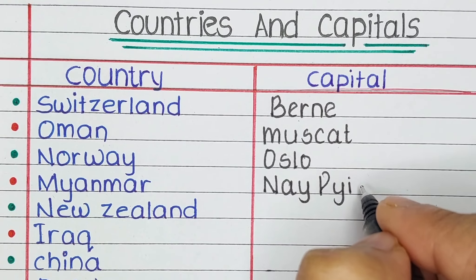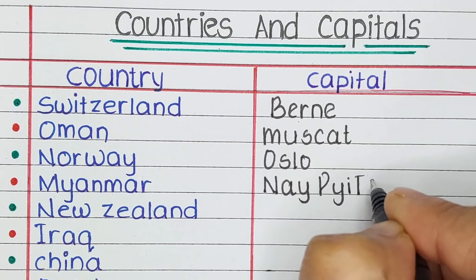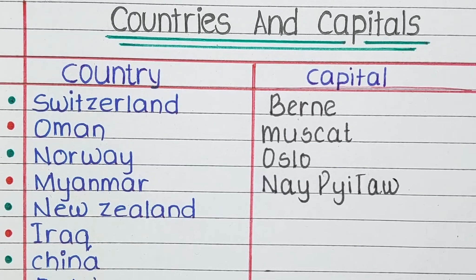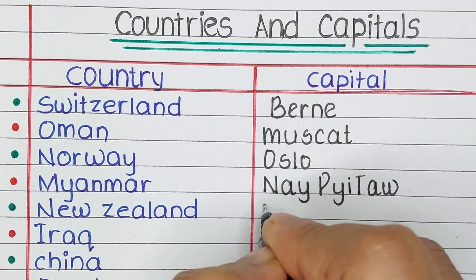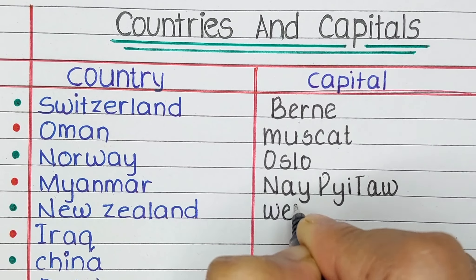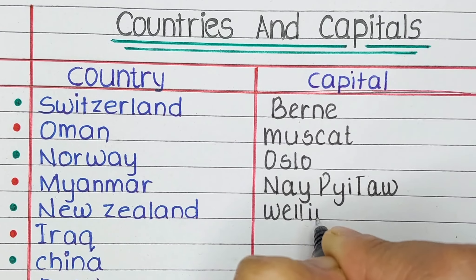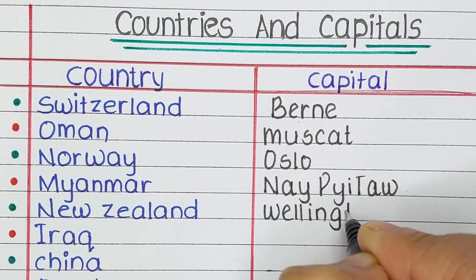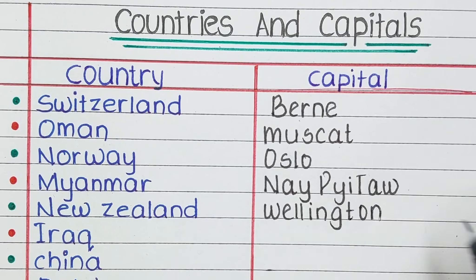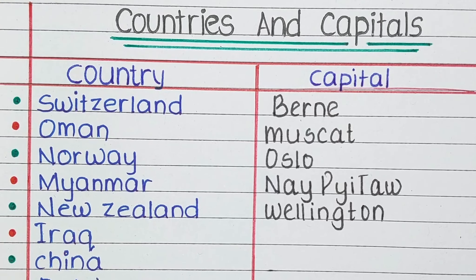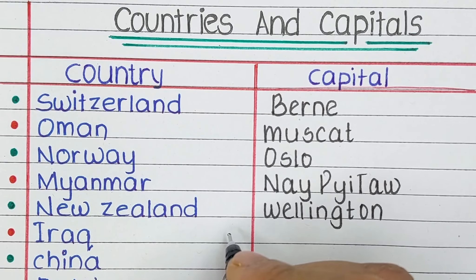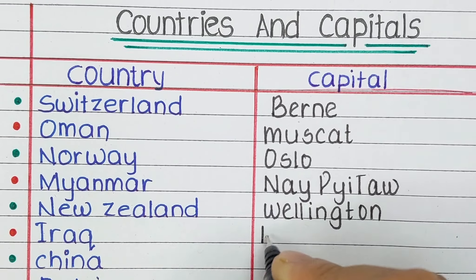Next is Myanmar. The capital of Myanmar is Naypyidaw. Next is New Zealand. The capital of New Zealand is Wellington.